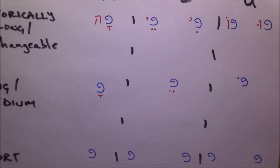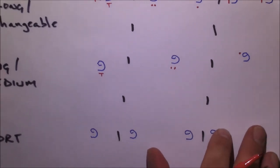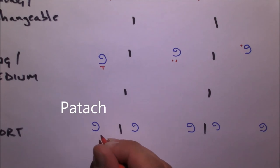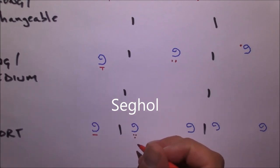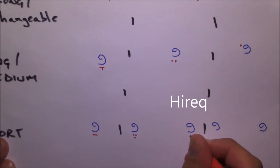In our short class, in the A class, we have the patah. Looks like a kamatz without the tail at the bottom. This is also pronounced ah, but you might want to pronounce it just a slight bit shorter than a kamatz, if you like to make that distinction. In our I class, we have our segol, which is an e sound. And we have our hirak. Notice not a hirak yod, but just a hirak. And this is our i sound.